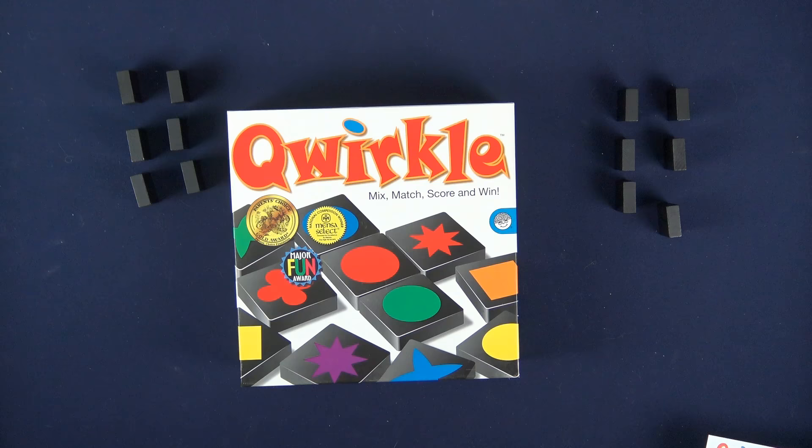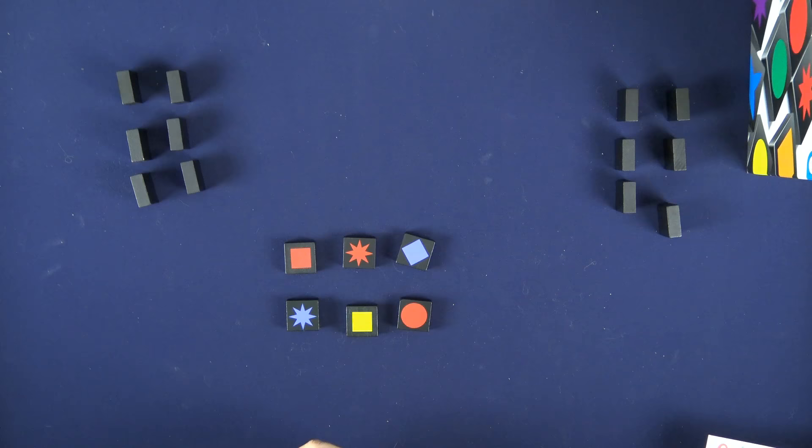Hi, this is Nathan from Teach the Table and this is how you play Qwirkle. Each player is going to have six tiles that they keep secret from all the other players and they indicate different shapes and colors.